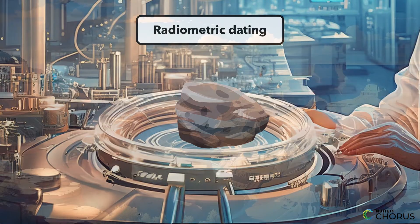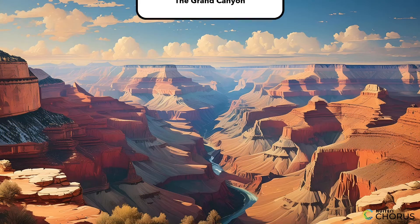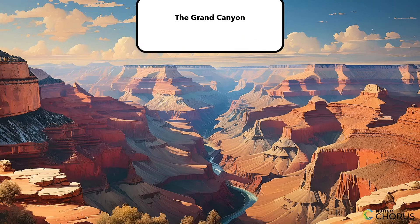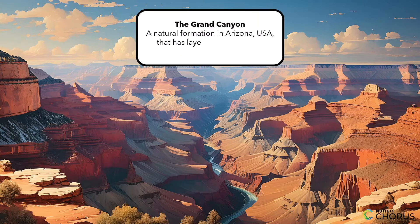One real-world example of how analyses of rock formations and the fossils they contain are used to establish relative ages of major events in Earth's history is the study of the Grand Canyon. The Grand Canyon is a natural formation in Arizona, USA, that has layers of rock that are millions of years old.